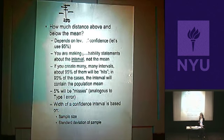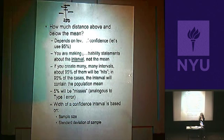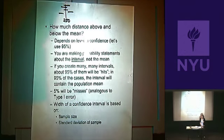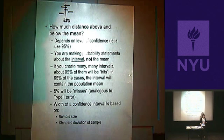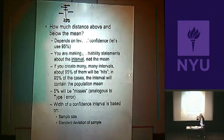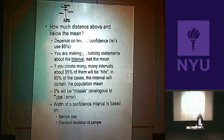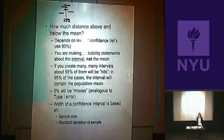The width of a confidence interval is based on sample size and standard deviation. The formula is: confidence interval equals X-bar plus or minus a critical value times the standard error. For a large sample (n ≥ 100), you can use a Z critical value. For 95% confidence, the Z critical value is approximately 1.96 — that's why the textbook says approximately two standard errors above and below the mean.